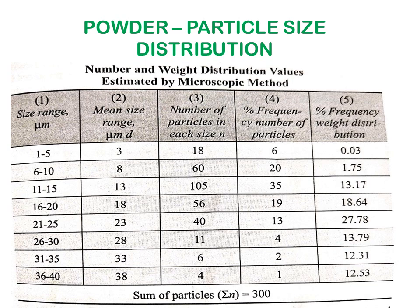This data shows number and weight distribution values for a given sample estimated by microscopic method. The tabular column includes: size range, mean size range, number of particles in each size, percentage frequency of number of particles, and percentage frequency weight distribution. The third column is converted into the fifth column using the formula from the previous slide. This data will be used to represent the distribution curve graphically.